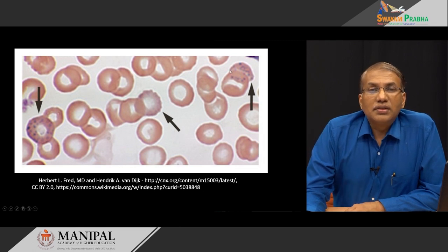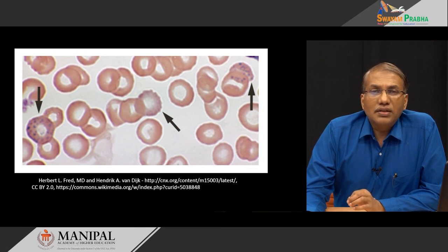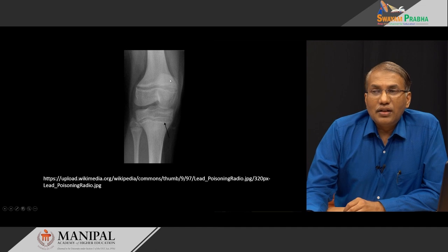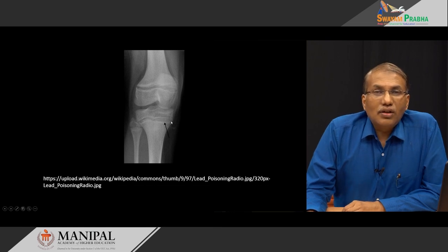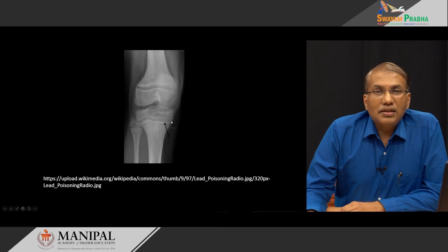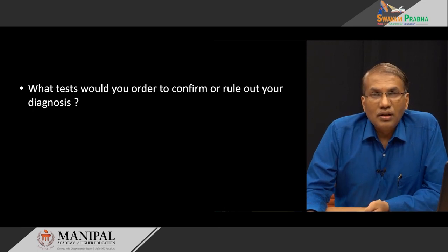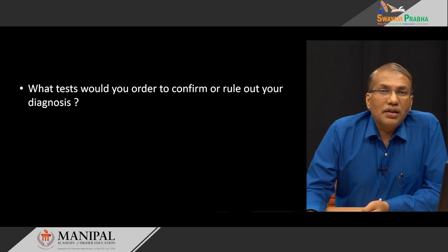Basophilic stippling in RBCs was a very clear indication of lead poisoning. Further, an X-ray showed a dark color deposition at the metaphyseal region called lead lines — a typical feature of lead poisoning. With these findings, the probable diagnosis is obvious: this is a typical case of acquired porphyria.